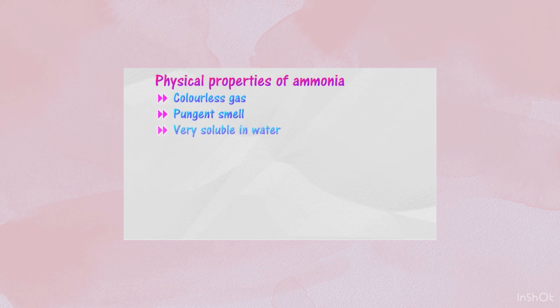Properties of ammonia. Ammonia is one of the most important industrial chemicals. Ammonia is colorless and pungent gas. It is highly soluble in water.